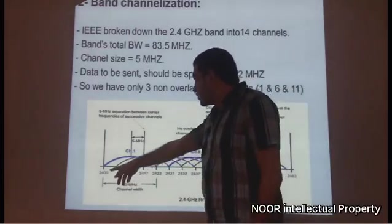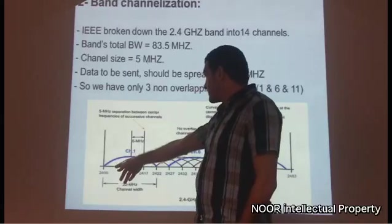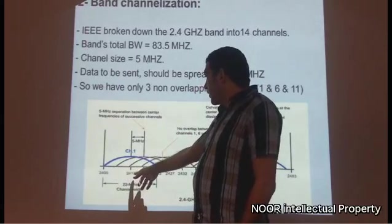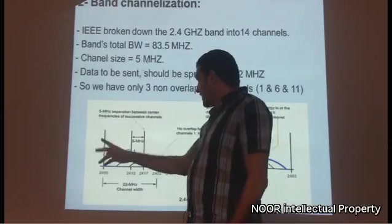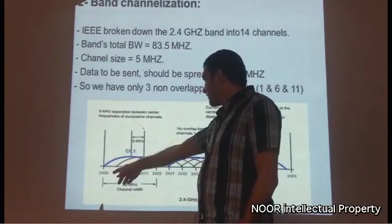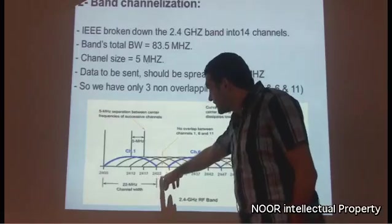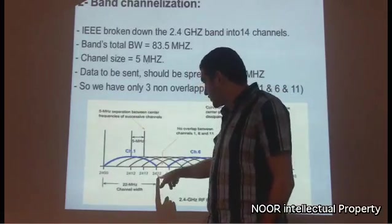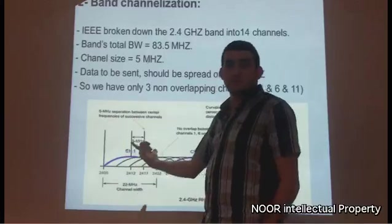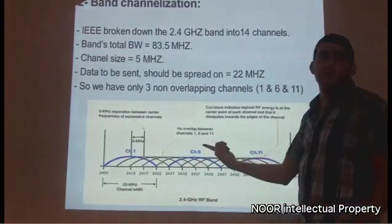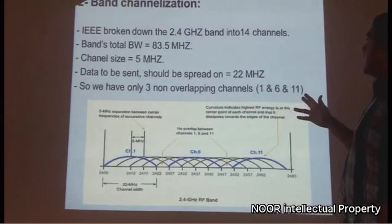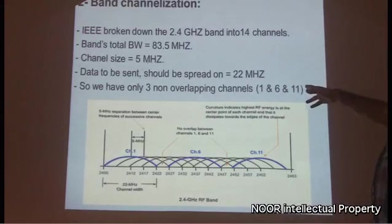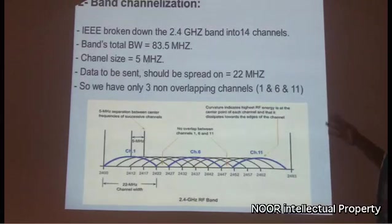To verify this: channel 1 starts at 2.412 GHz. Subtracting 2.400 from 2.422 GHz gives a bandwidth of 22 MHz per channel. This confirms that the only non-overlapping channels are 1, 6, and 11, which can be used simultaneously.